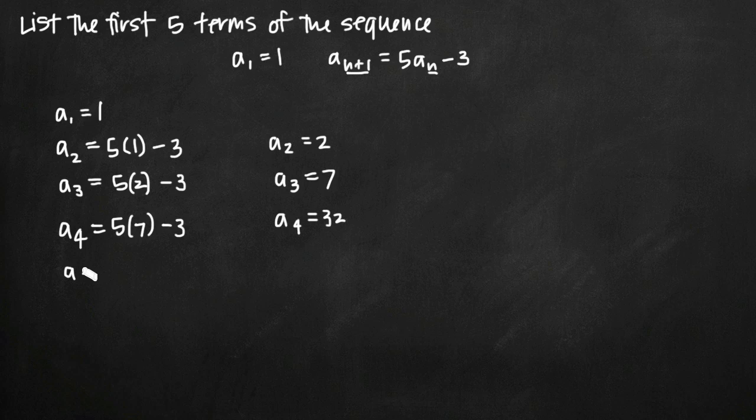And finally a₅, the fifth value or the fifth term in our sequence, will give us 5 times 32 minus 3, which is going to give us 160 minus 3 or a₅ = 157.